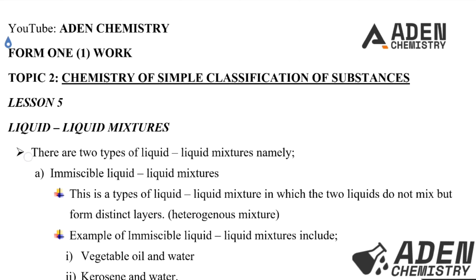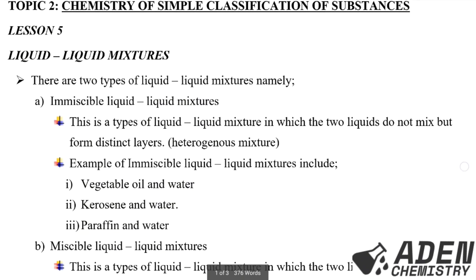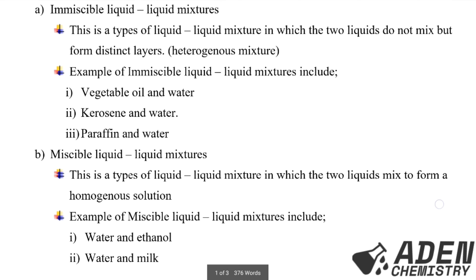We are saying there are two types of liquid-liquid mixtures. The first is immiscible liquid-liquid mixtures — this is a type of liquid-liquid mixture in which the two liquids do not mix but form distinct layers, or in other words, they form a heterogeneous mixture. Examples of immiscible liquid-liquid mixtures include vegetable oil and water, kerosene and water, and paraffin and water.